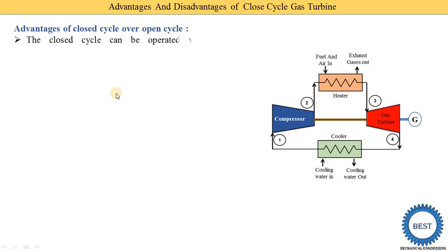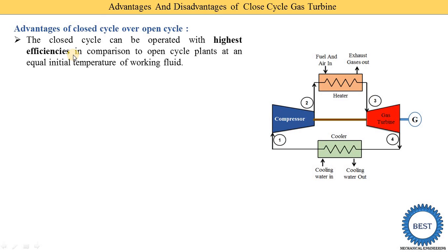The next advantage is that the closed cycle can be operated with higher efficiency compared to the open cycle plant at an equal initial pressure of working fluids. Maintaining the same initial temperature T1 for both cycles, the closed cycle gives higher efficiency.